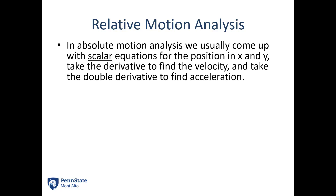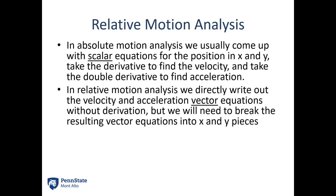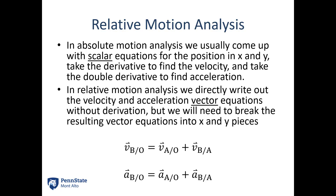In absolute motion analysis we had scalar equations — the x and y positions. Here, we're going to start with vector equations, and then we're going to need to break those down into x and y pieces. This is our overall equation for velocity — just a two-step process. Velocity of point B with respect to ground equals velocity of point A with respect to ground plus the velocity of point B with respect to A. And the same thing applies for acceleration. Each of those pieces is going to be hopefully either a simple rotation or a simple extension.